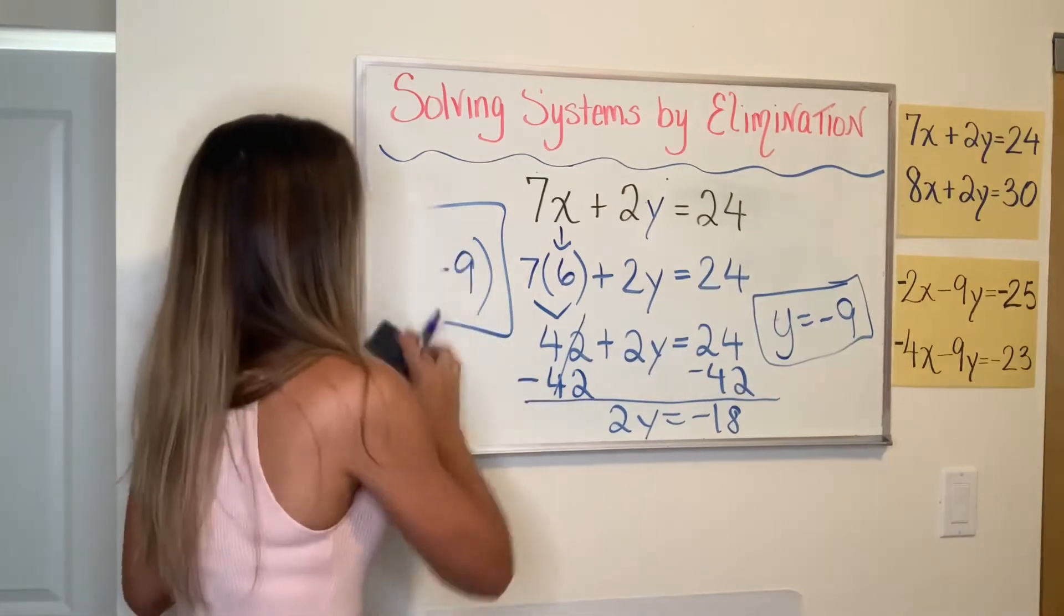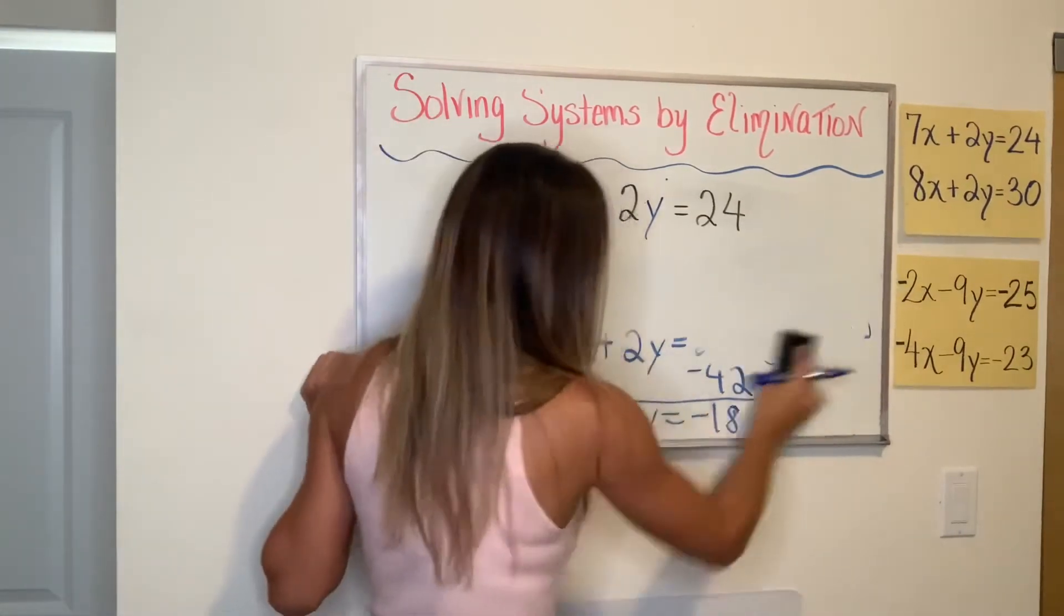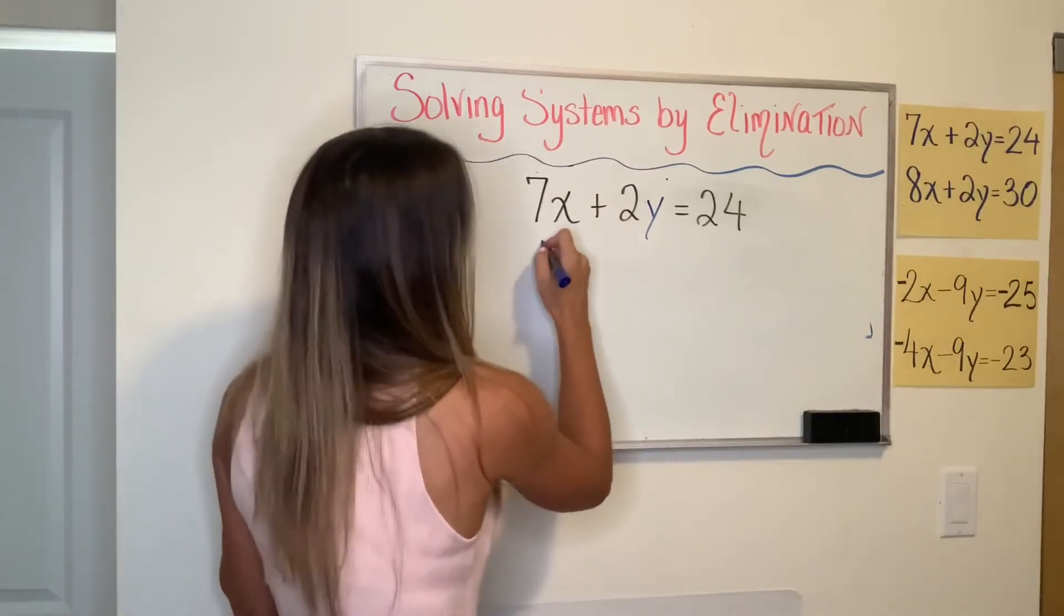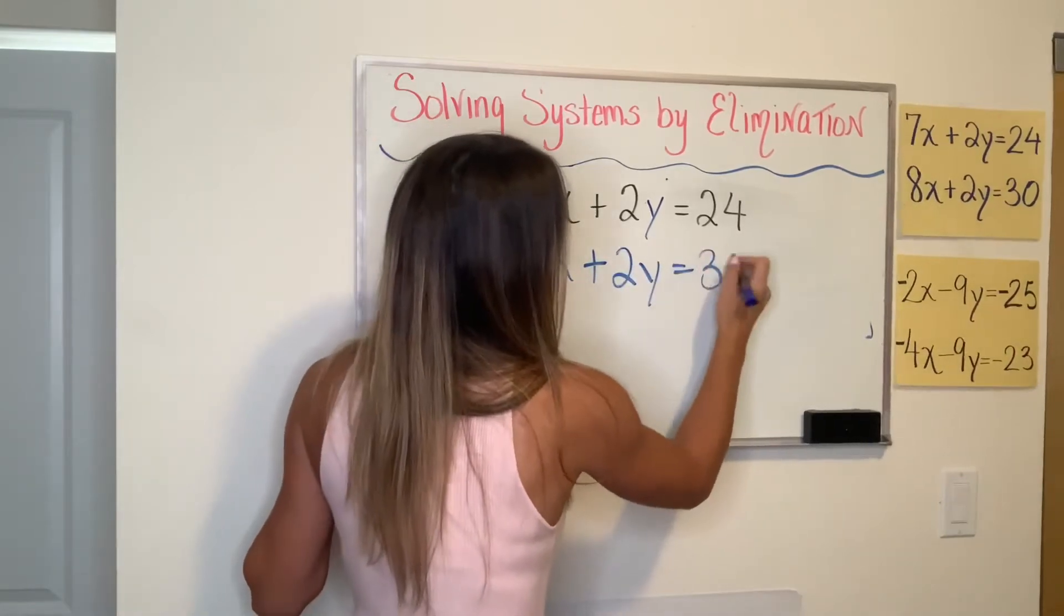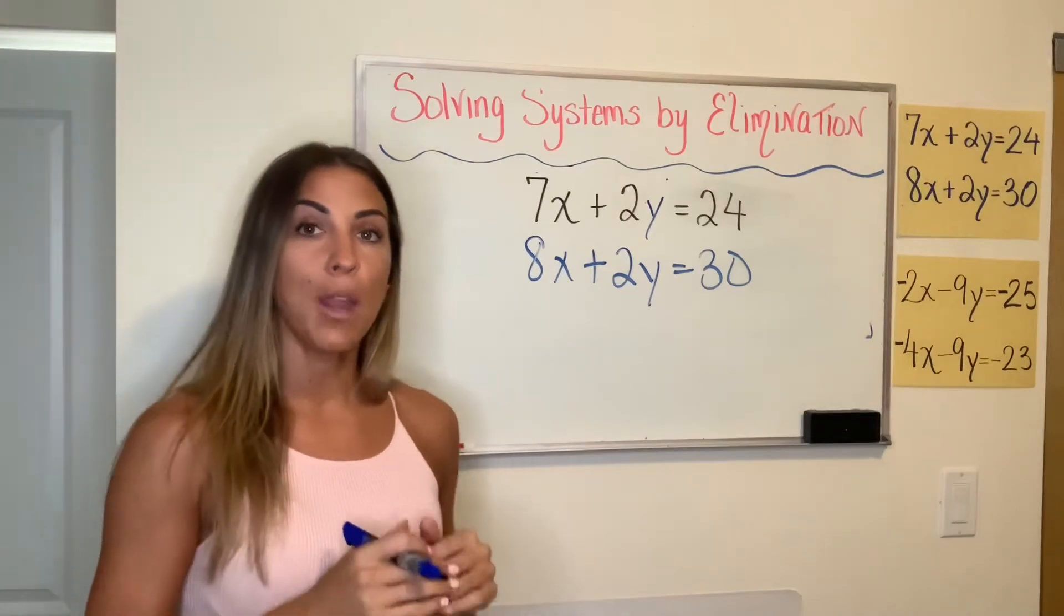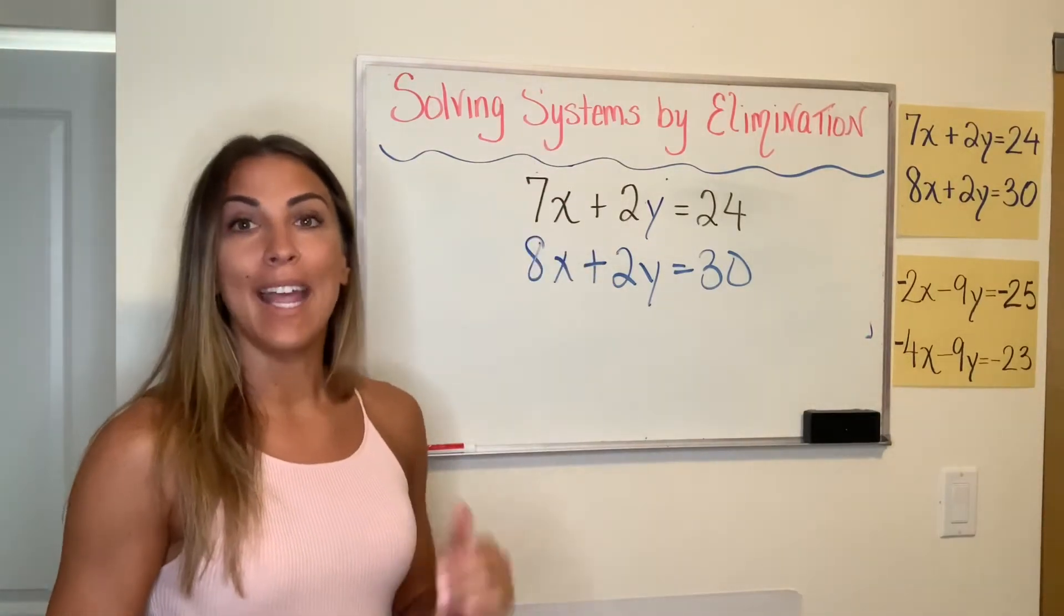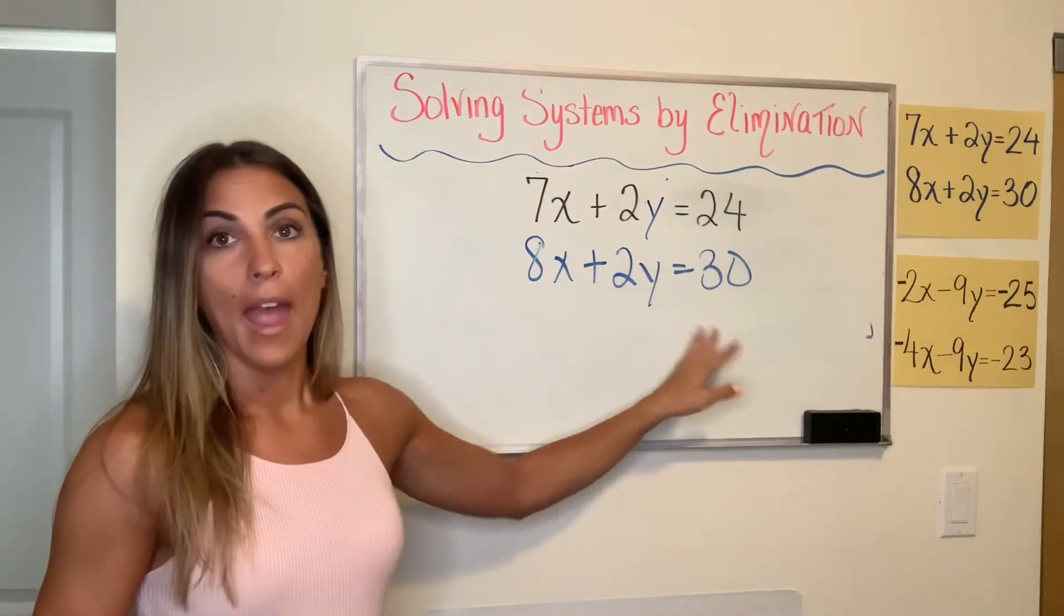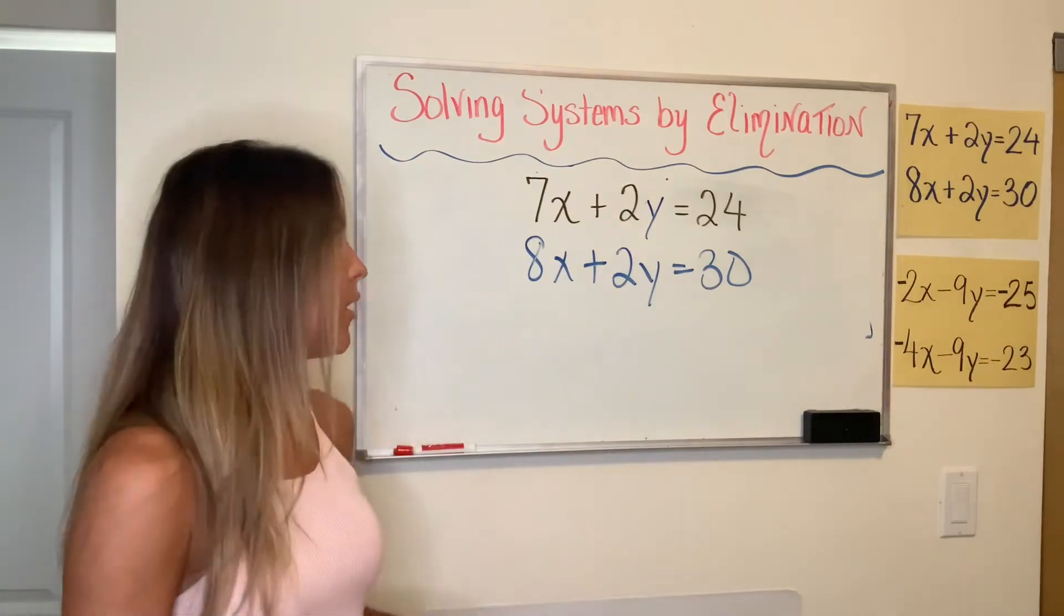Now I'm going to show you a different way to do this. So if you don't like the subtraction method and you learned how to add the equations together and you want to stick to addition only, here's what you can do. We want opposite coefficients, but we have the same ones. So what you can do is you can multiply one of these entire equations by negative one. And what that will do is change the sign of every term. And once the signs are changed, you will have opposite coefficients.